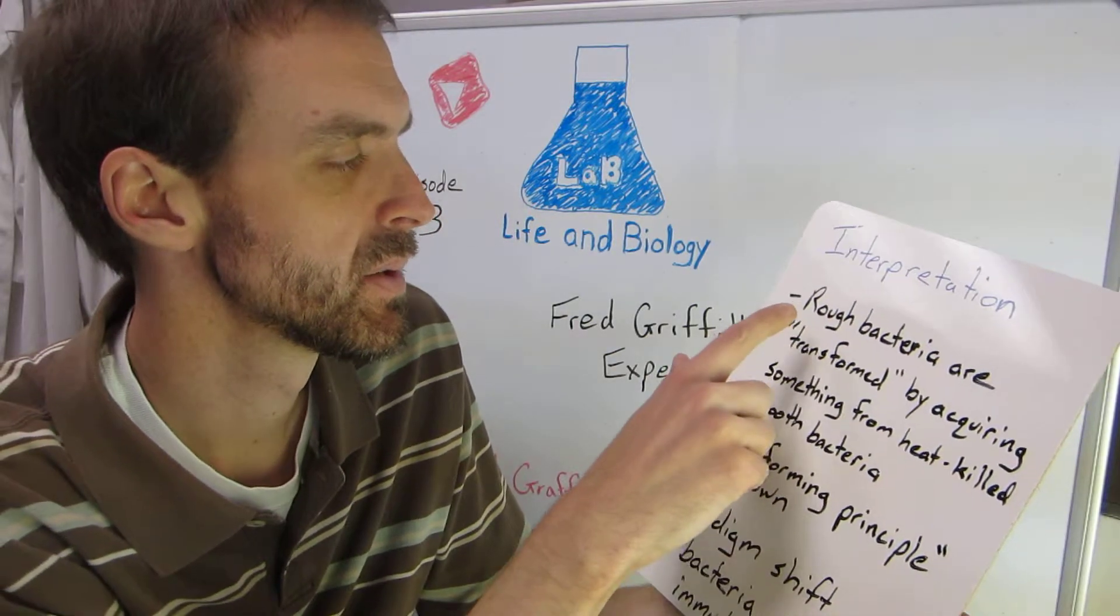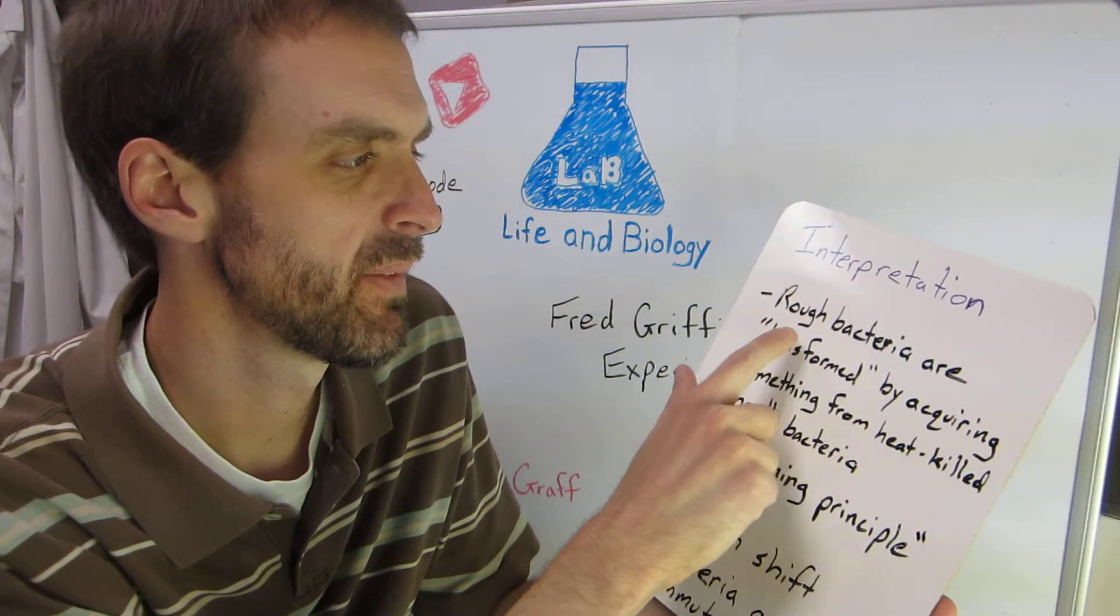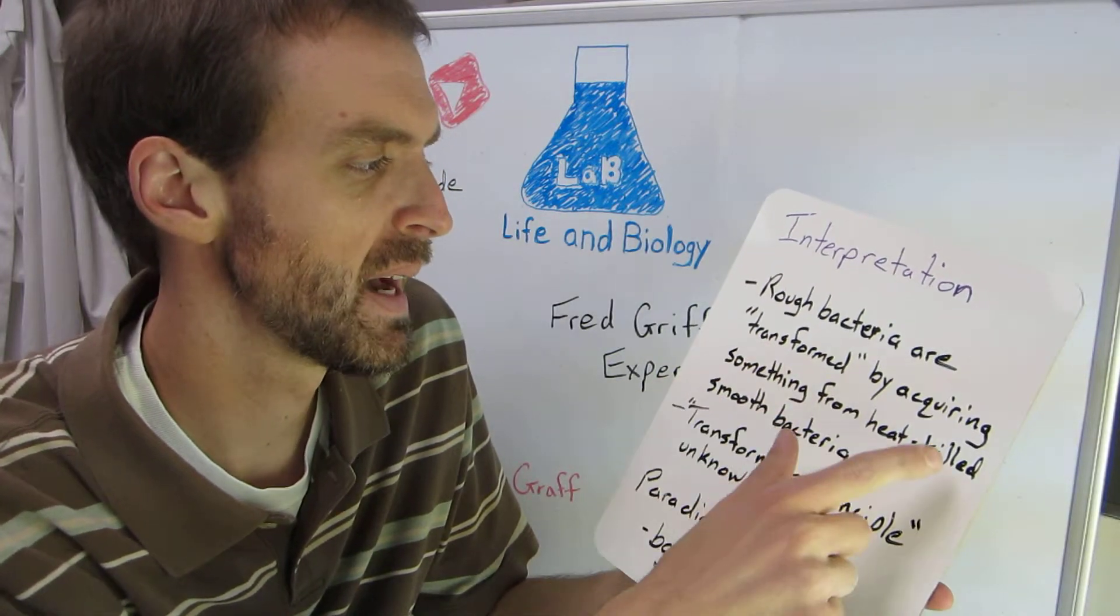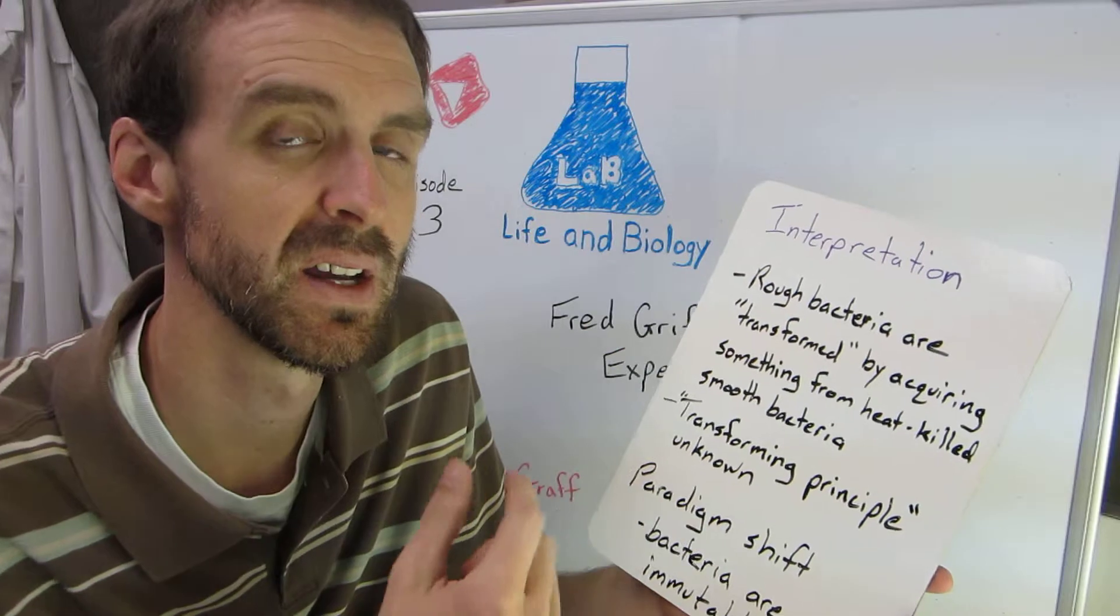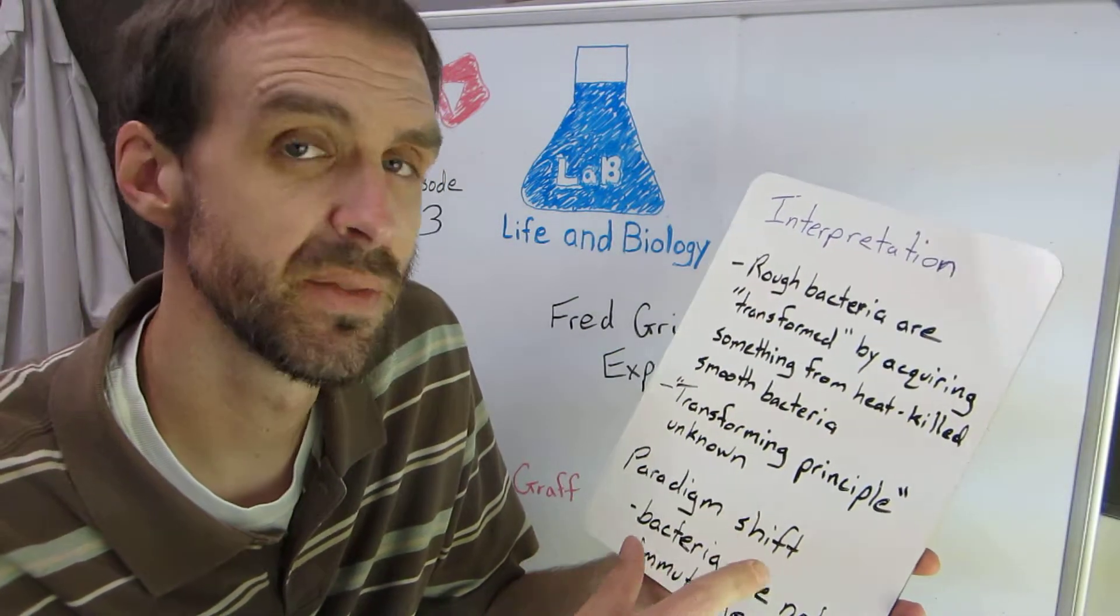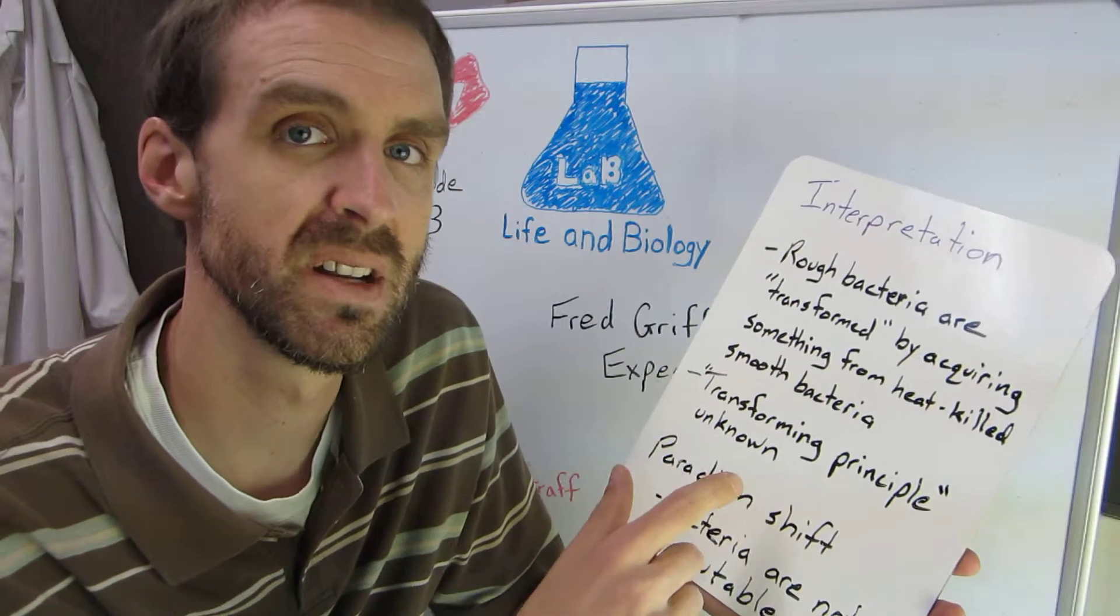The interpretation is that the rough bacteria are what he called transformed by acquiring something from the heat-killed smooth bacteria. This something is what he called the transforming principle, but it remained unknown.